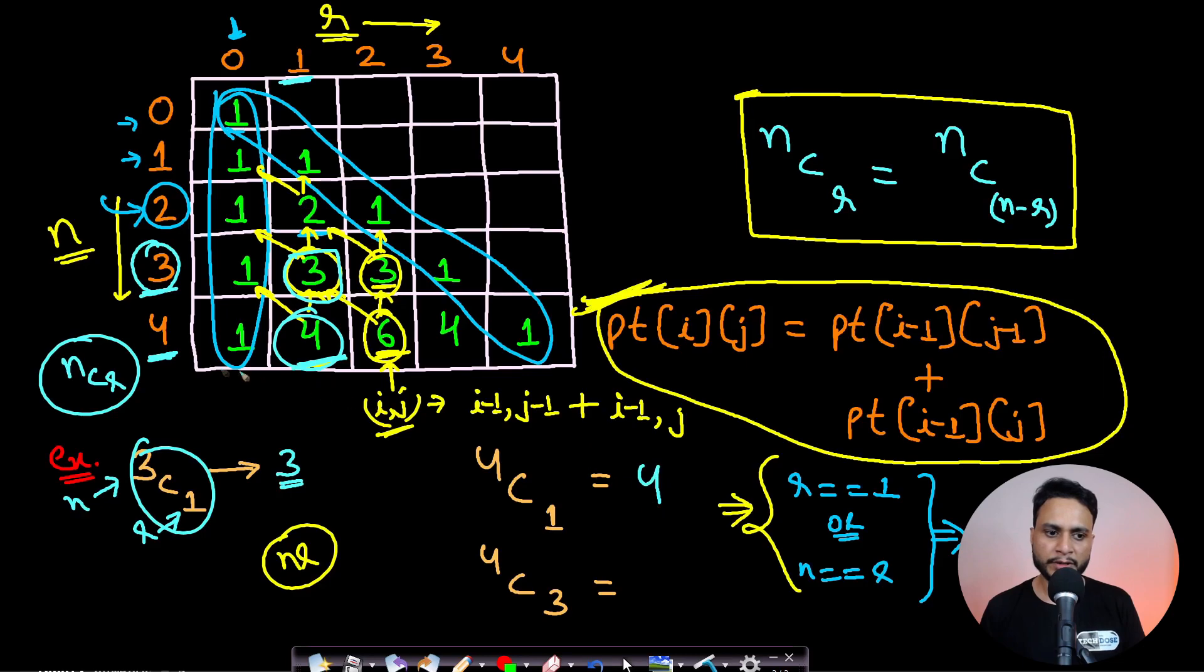If you want to find 4C3, go to row 4, column 3, and this will be 4 as well. We know by property that nCr equals nC(n-r), so you can use this property as well to see if two combination values are the same.